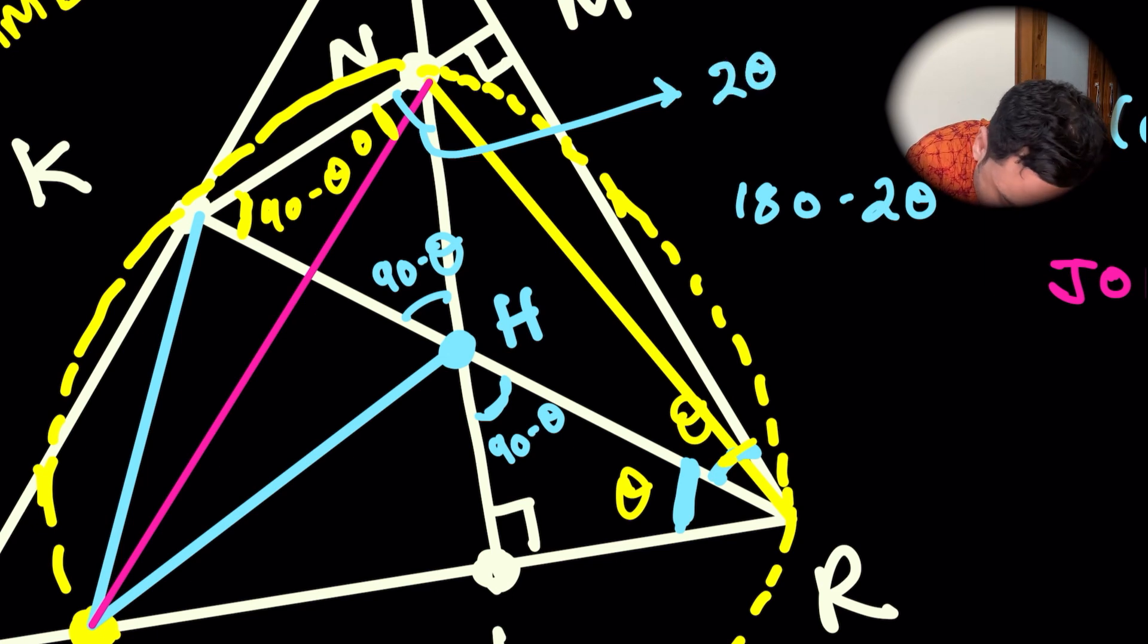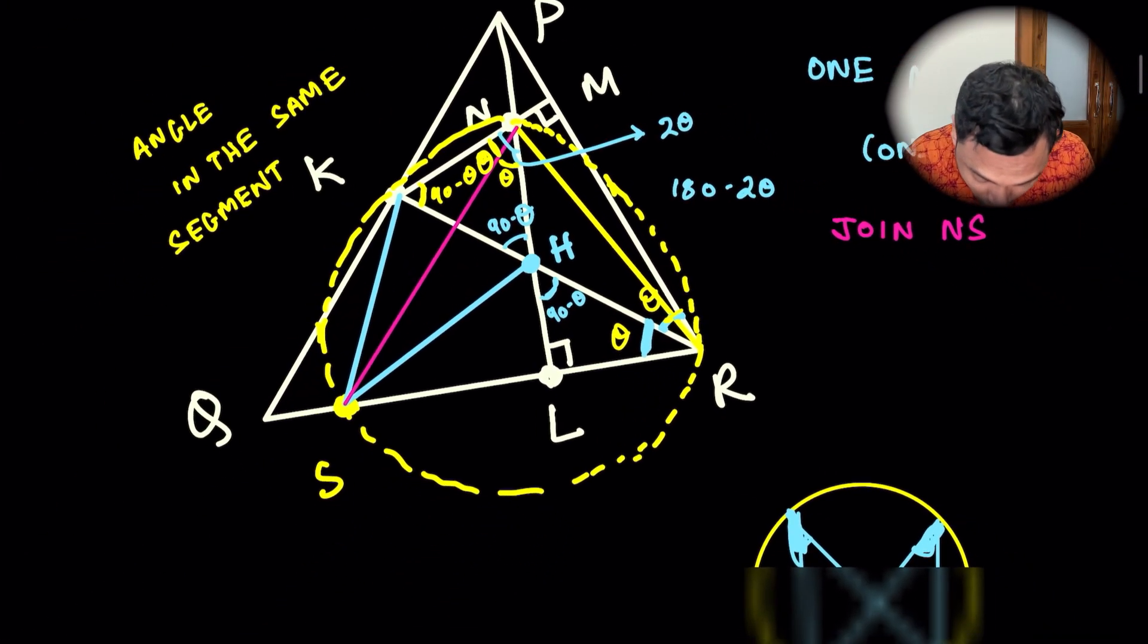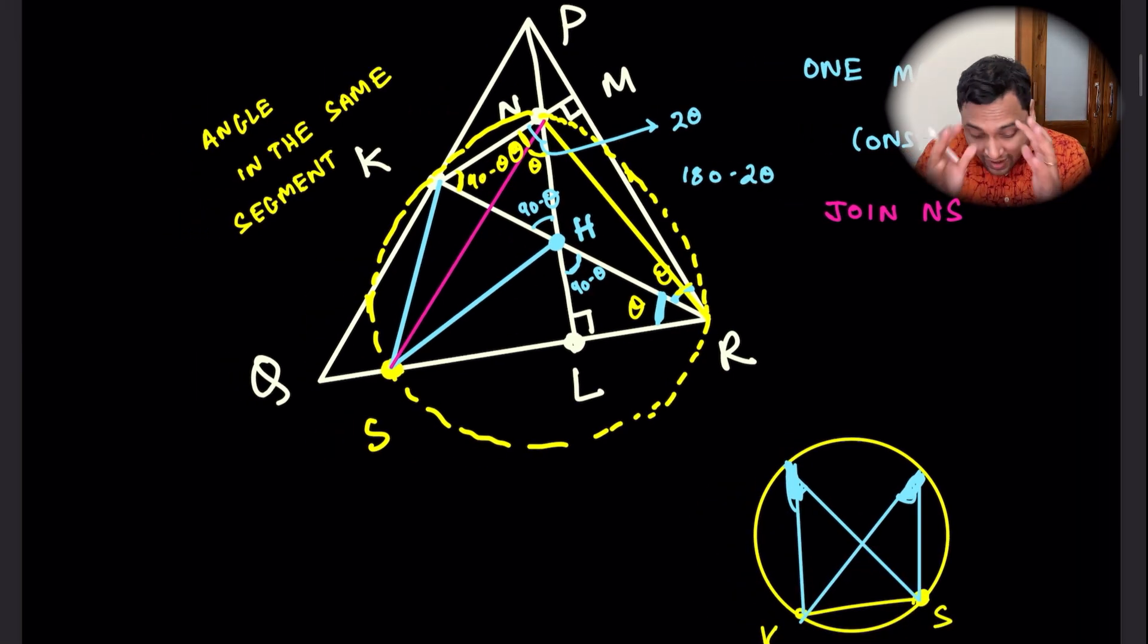This total angle is 2 theta. Now, this angle is 2 theta means this angle is theta we have already shown, which means this angle must be theta as well. We now have the setup ready. We have done some angle chasing and we have found certain pieces. Now we will put them together again.